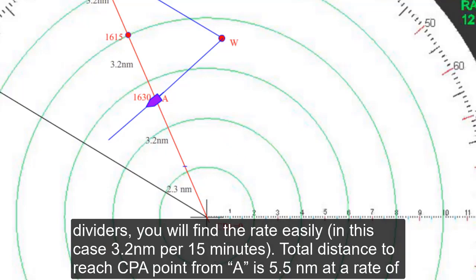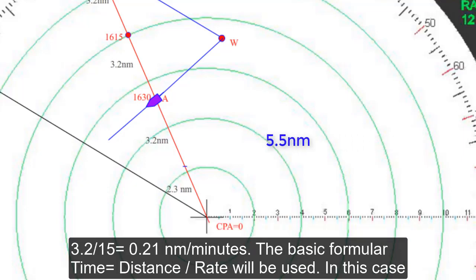By measuring with the dividers, you will find the rate easily—in this case, 3.2 nautical miles per 15 minutes. Total distance to reach CPA point from A is 5.5 nautical miles at a rate of 0.21 nautical miles per minute. The basic formula time equals distance per rate will be used.